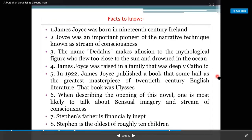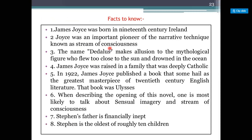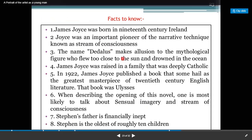Some facts to know: James Joyce was born in 19th century Ireland. Joyce was an important pioneer of the narrative technique known as stream of consciousness. The name Daedalus makes allusion to the mythological figure who flew too close to the sun and drowned in the ocean. James Joyce was raised in a family that was deeply Catholic. In 1922, James Joyce published a book that some hailed as the greatest masterpiece of 20th century English literature. Stephen's father is financially inept, and Stephen is the oldest of roughly 10 children.